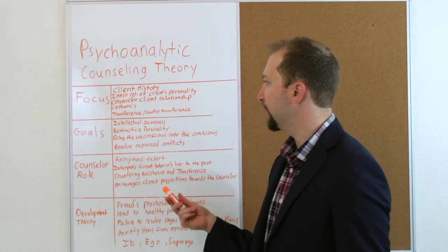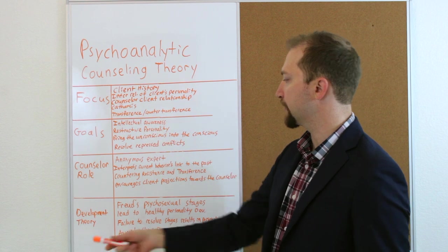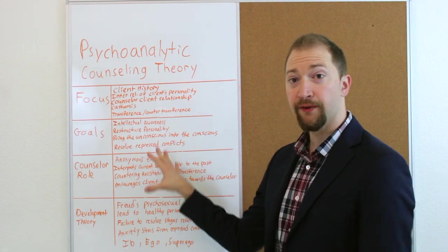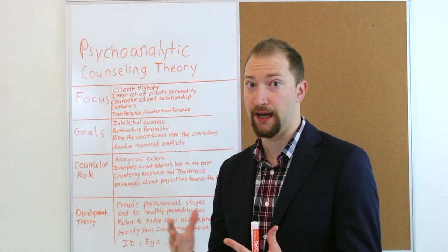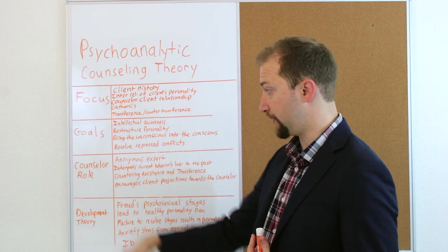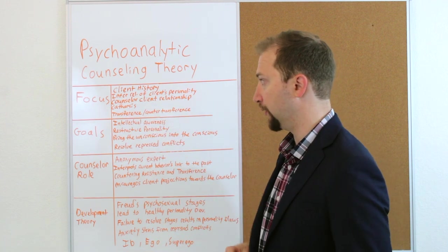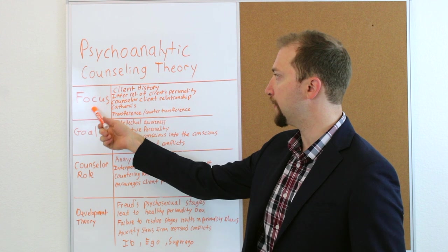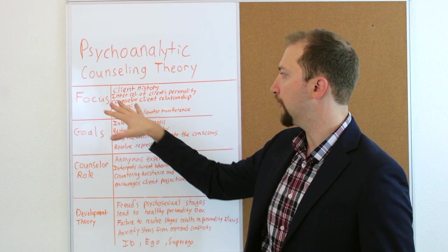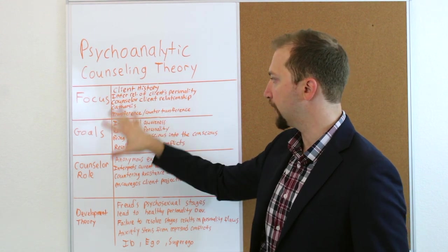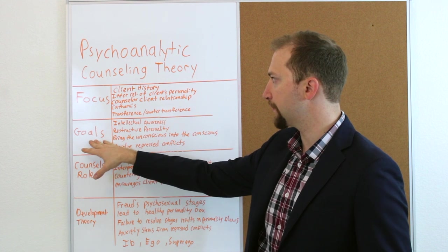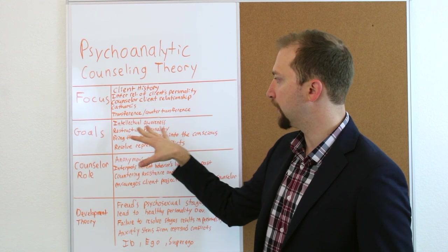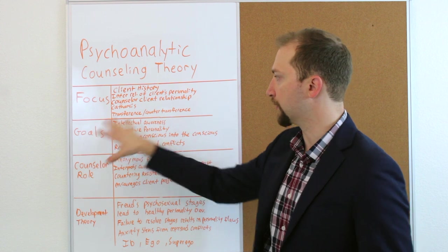I have it broken down into four sections. This is an overview of the theory. I could talk about this theory a lot. There's a lot to it. This is just a quick, brief, general overview. So we've got the key focus of the theory, what they prioritize. We've got goals that the theory in counseling, like what their goals are.